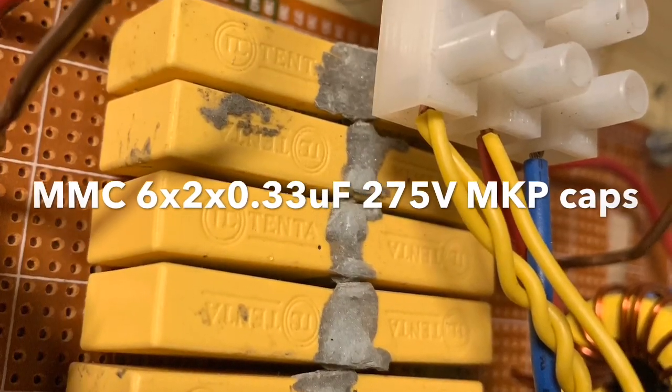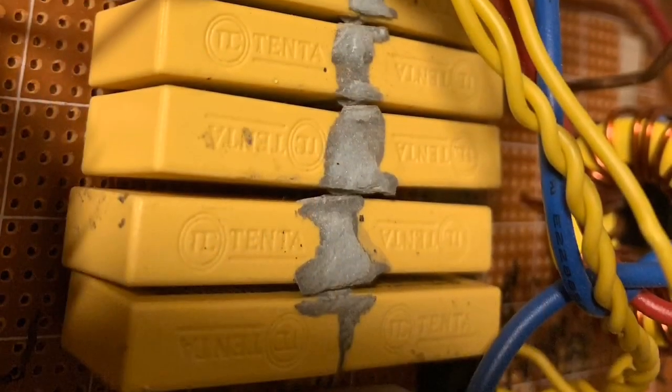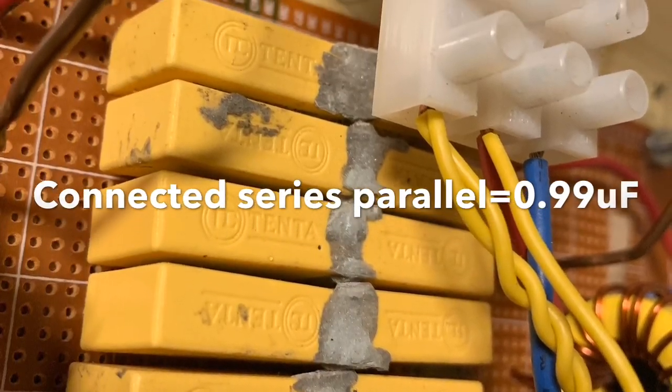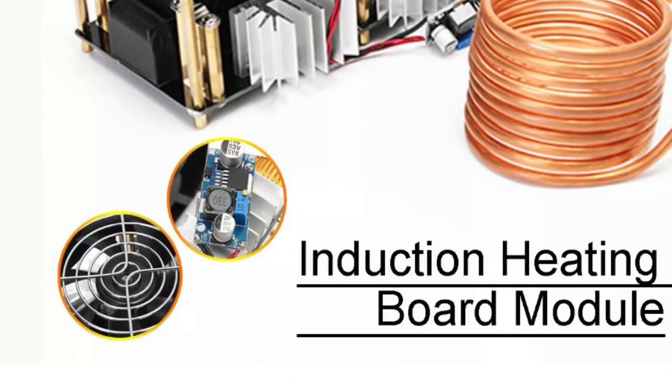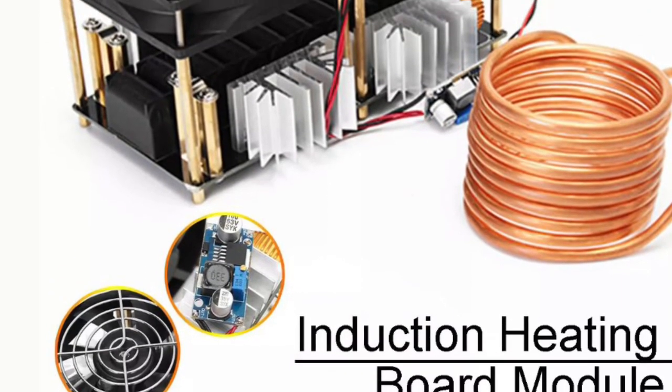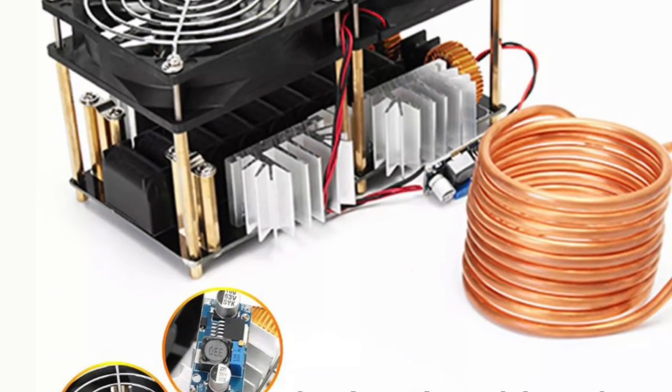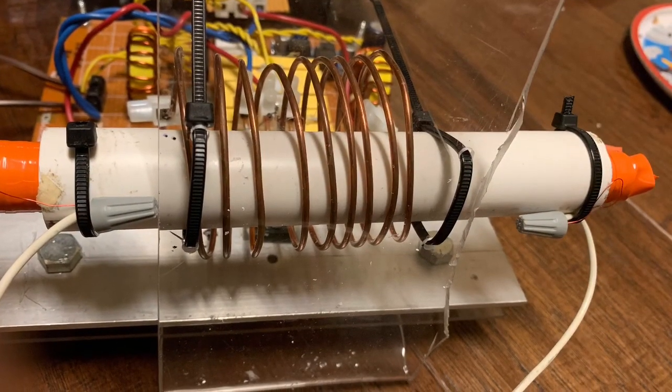The yellow caps are 275 volts MKP. Here's a similar but slightly less versatile driver that you can buy from eBay. This is a ZVS driver.